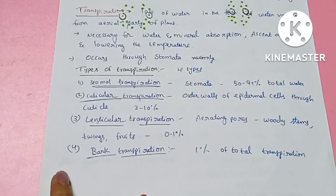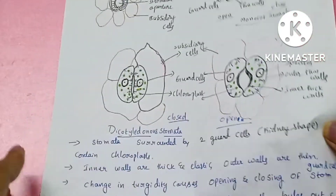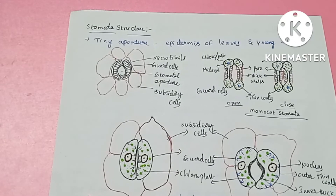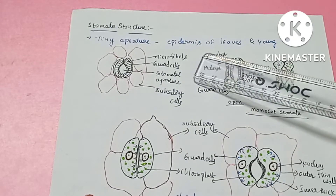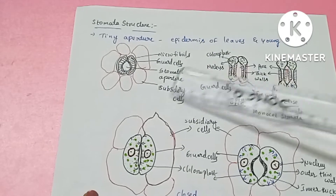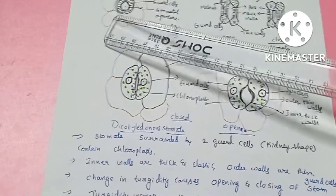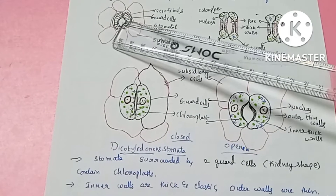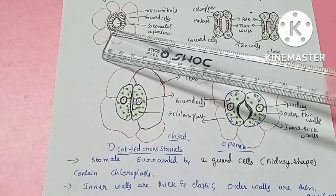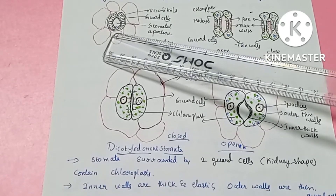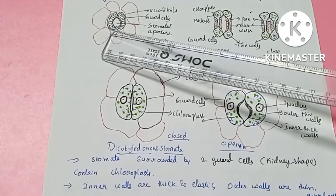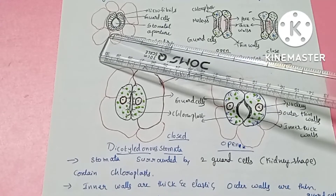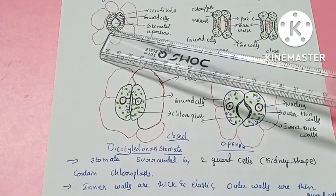This is all about the types of transpiration. Now we will see the structure of stomata. The two cells surrounding the stomatal pore are called guard cells. These guard cells are kidney-shaped in dicots and bean-shaped in monocots. Guard cells contain chloroplasts and can perform photosynthesis.